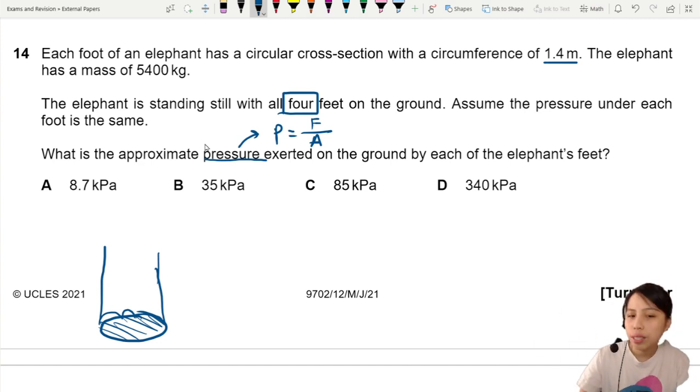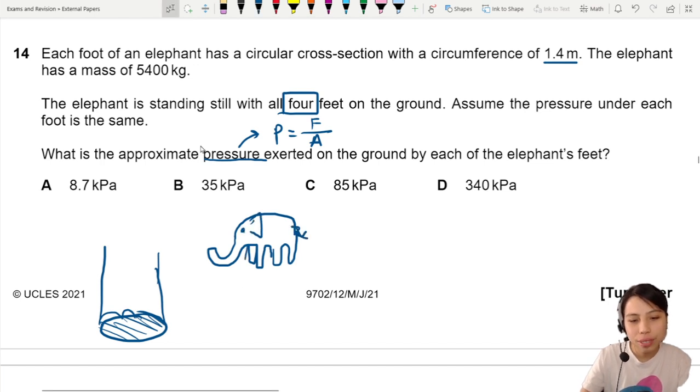So in our case, what is the force? The force is going to be the elephant's weight. Because if I draw... Man, how do I draw an elephant? One, two, three, four. Well yeah, this pretend is the elephant. So the elephant has a mass, right? 5400 kg. That's going to be related to the weight. So we gotta write that in.